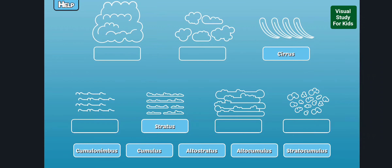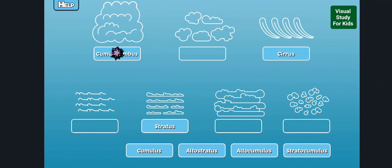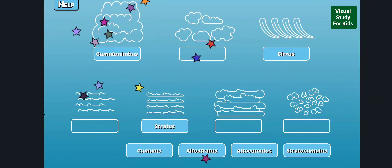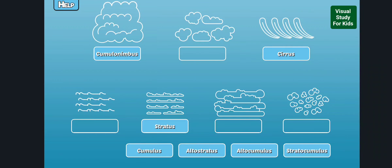Label the cloud types: cumulonimbus. Cumulonimbus clouds are tall and span all the way from low to high level. They can cause large thunderstorms, heavy rain, and sometimes tornadoes.